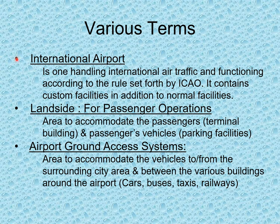An international airport handles international air traffic according to rules set forth by ICAO and contains customs facilities in addition to normal facilities. The land side is the area for passenger operations, accommodating the terminal building and passenger vehicle parking. Airport ground access systems accommodate vehicles to and from the surrounding city area and between the various buildings around the airport — including cars, buses, taxis, and railways.